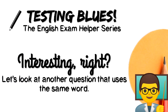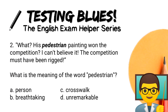Let's look at another question that uses the same word. 'His pedestrian painting won the competition? I can't believe it. The competition must have been rigged.' What is the meaning of the word 'pedestrian'? A. Person. B. Breathtaking. C. Crosswalk. Or D. Unremarkable. This time you get 10 seconds. Be sure to make use of the context clues technique that we learned in the last episode, and make sure to note what part of speech 'pedestrian' is in this question. Timer starts now.